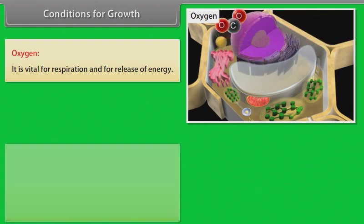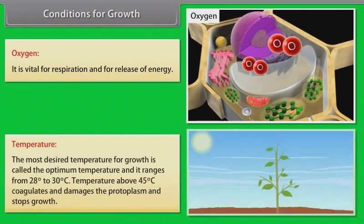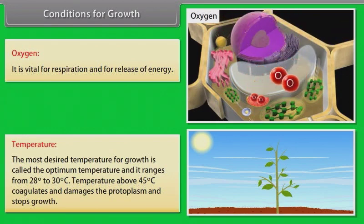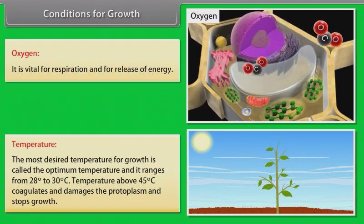Temperature. The most desired temperature for growth is called the optimum temperature and it ranges from 28 degrees to 30 degrees Celsius. Temperature above 45 degrees Celsius coagulates and damages the protoplasm and stops growth.